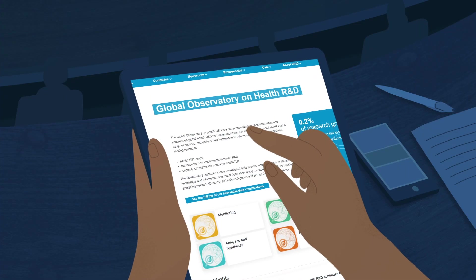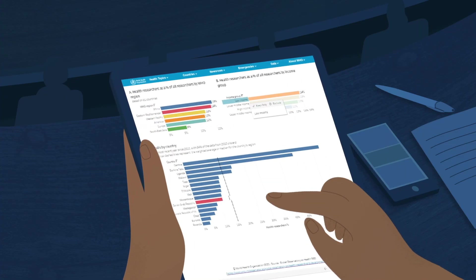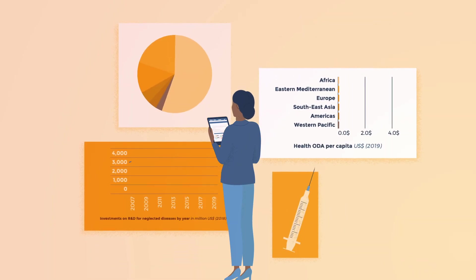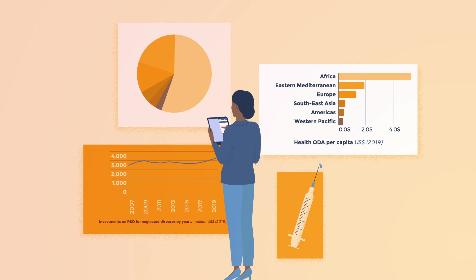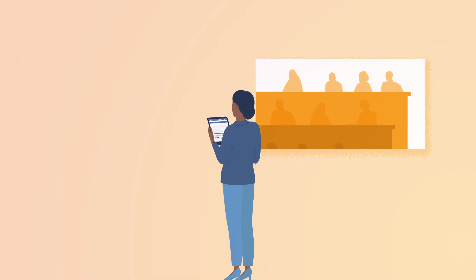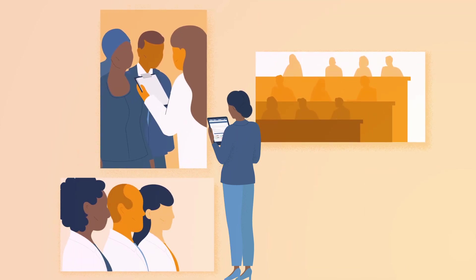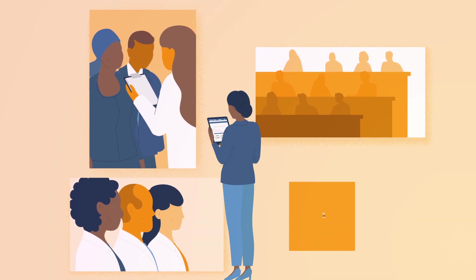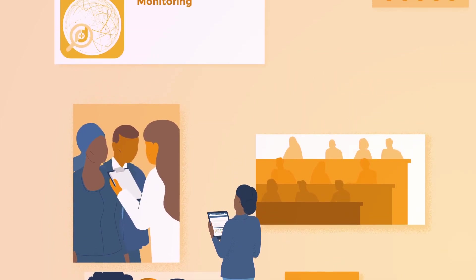The World Health Organization created the first-ever Global Observatory on Health Research and Development, bringing together and analysing global R&D data to help governments, funders, and researchers make better decisions on new investments while identifying gaps in capacity.